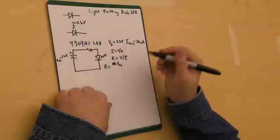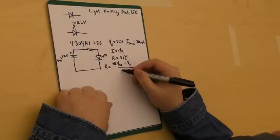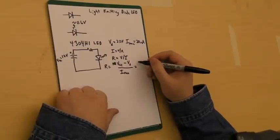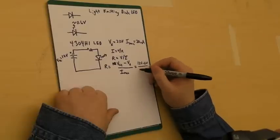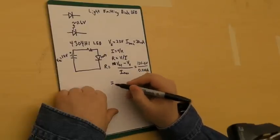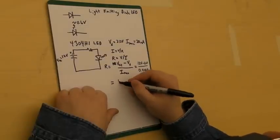VCC equals 12 here. VCC minus the voltage drop over the max current. Which in this case is 12 volts minus 2 volts over 0.020 amps, which equals, let's see here, 10 over 0.02 is 500 ohms.